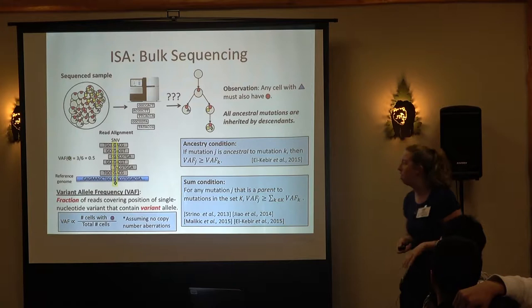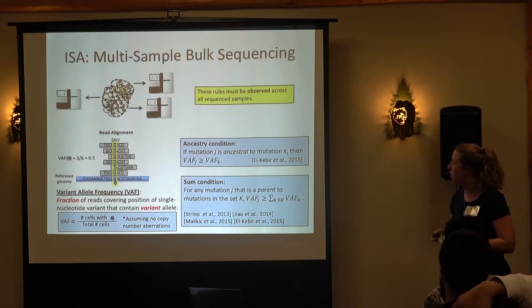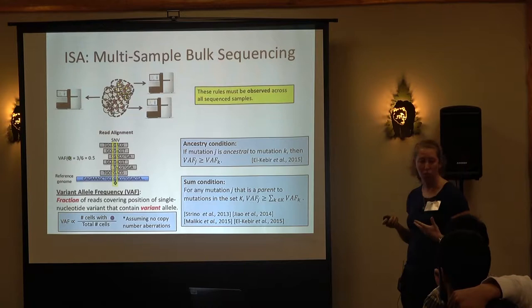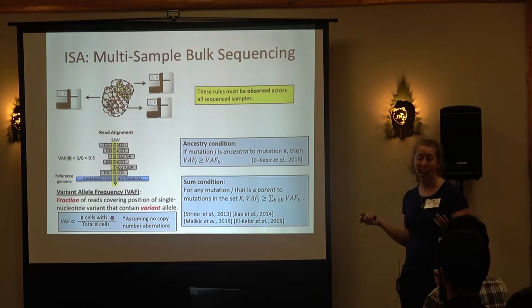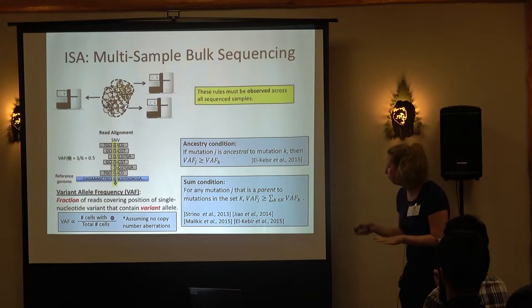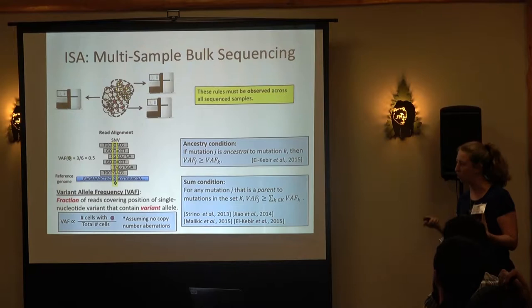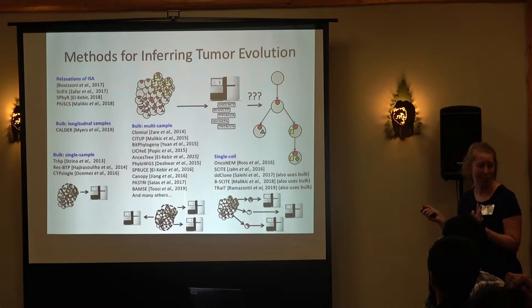Another thing that has been done is looking at multi-sample sequencing. If we take multiple samples from the same tumor, we expect to see these same relationships consistent across all samples; if they're not, that might give us information that two mutations have to be on distinct lineages. This is just a whirlwind of the basic ideas used to start to reconstruct these tumor evolution trees.